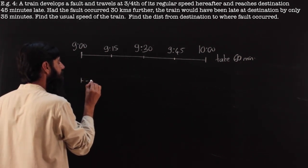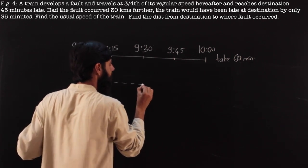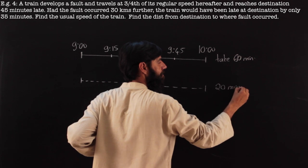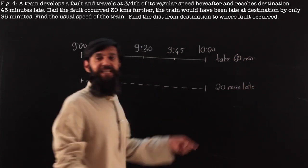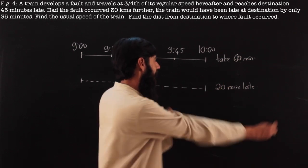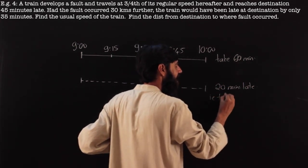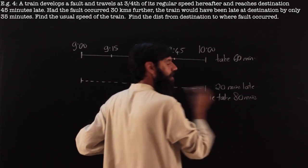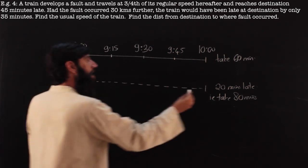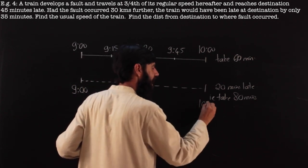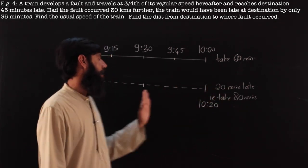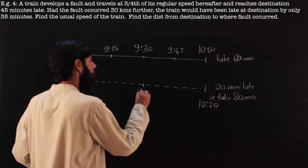Now suppose the next day I cover the same distance at a slightly reduced speed and I am 20 minutes late compared to before. Since I'm 20 minutes late over 60 minutes, I now take 80 minutes total. Starting at the same time, I reach at 10:20 instead of 10:00. Forgetting the first case — at the midpoint, I take 40 minutes for half the way, so I'd be there at 9:40.